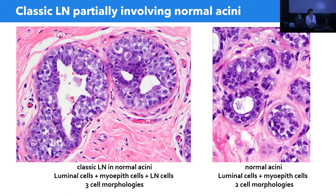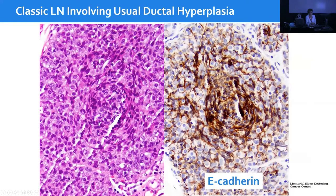Another situation is when classic lobular neoplasia involves UDH. Here is a proliferation with the streaming center characteristic of usual ductal hyperplasia, but with pale, round, fried-egg cells scattered throughout. When stained with E-cadherin, the result is negative — the positivity seen is from residual ductal cells and myoepithelial cells. The key is to find areas with two or more atypical cells and evaluate the membrane between them. The absence of staining confirms lobular neoplasia.